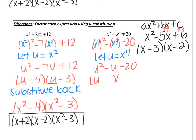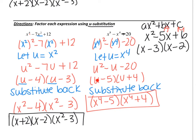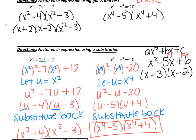This enables me to factor straight away as u minus 5 times u plus 4. Now just like before, we substitute back in: we let x to the fourth equal u, so every time I see u, I put x to the fourth back in. So the result is x to the fourth minus 5 times x to the fourth plus 4. If you look, these two problems have the same answer.